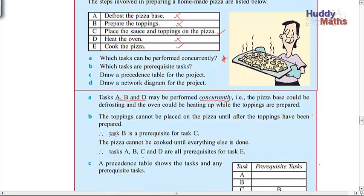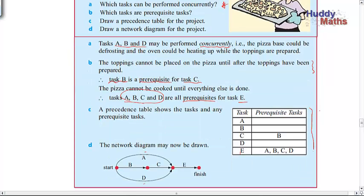The toppings can't be placed on the pizza until the toppings have been prepared. So task B, preparing the toppings, must be done before task C. That's putting them on the pizza. And at the end, A, B, C, and D are all needed before E. Because you can't cook it until everything else is done. So do you get the idea? So this is a good little thing to do. You've got your tasks as before. And then opposite each of them, you put what's needed to be done before it. Nothing for here, here and here. They can all be done together with nothing coming before. But C needs B to be done before. And E needs everything to be done.